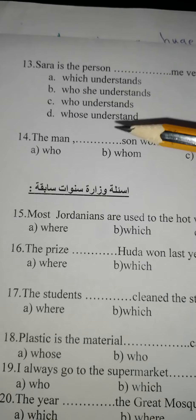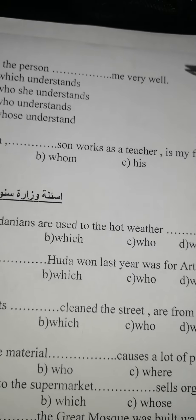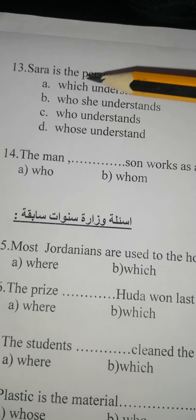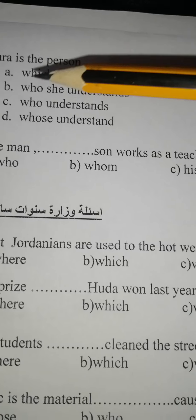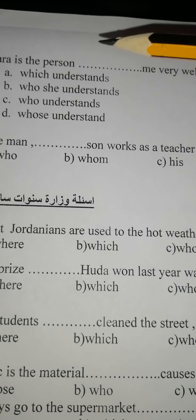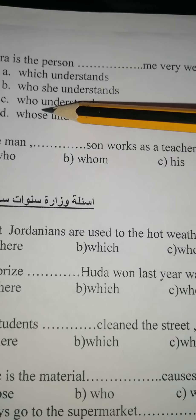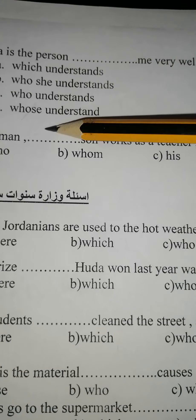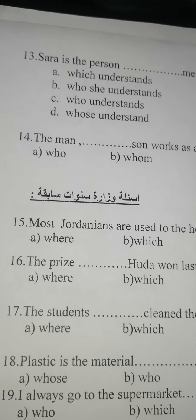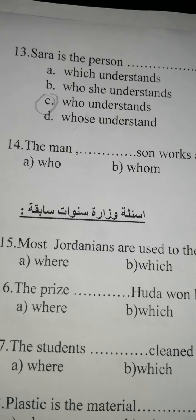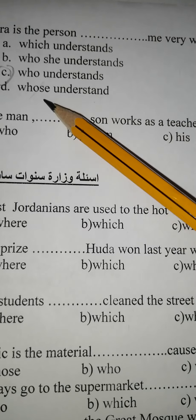Sarah is the person who understands me very well. The person — عاقل — أكيد بدي who أو whose. Who's بيجي وراها اسم مش فعل. She understands — أكيد لا، هو دايماً بيجي وراها الفعل مباشرة. فإذن the person who understands me — عرفنا كيف.